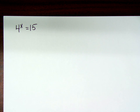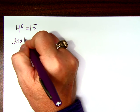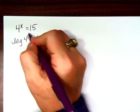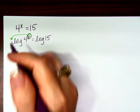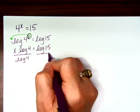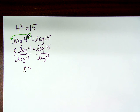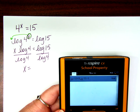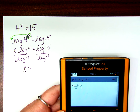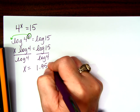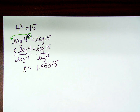We have a couple choices. We could take log base 10 of both sides. If we do that, the x comes down in front as a multiplier, so I get x log of 4 equals log of 15. Dividing both sides by log of 4, I get x equals log of 15 over log of 4, which equals approximately 1.95345.